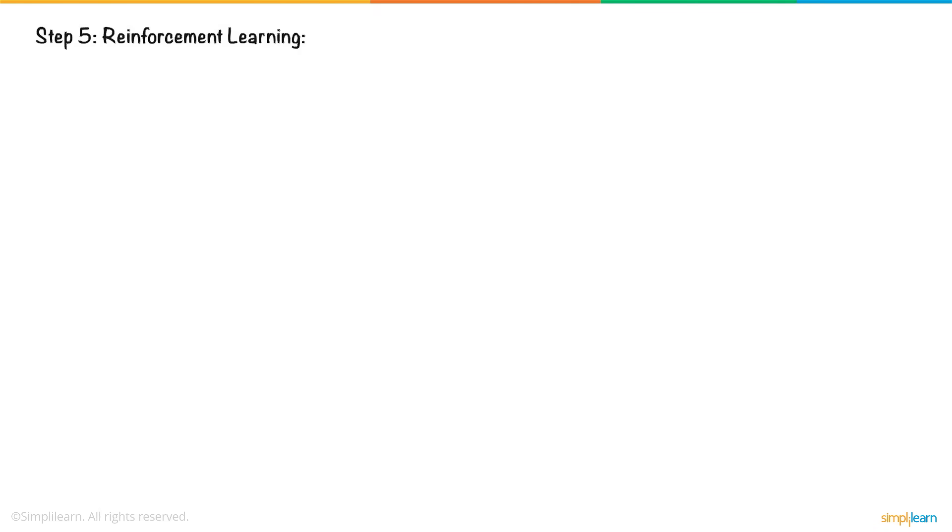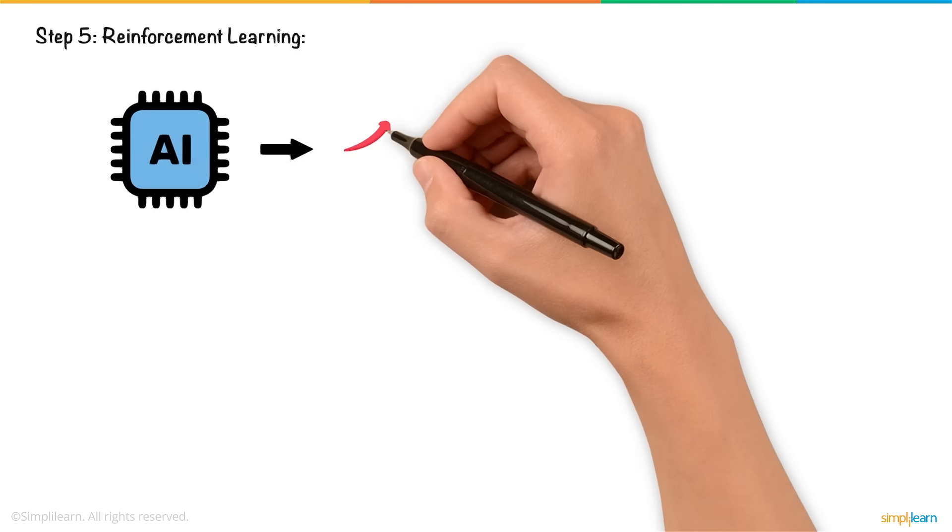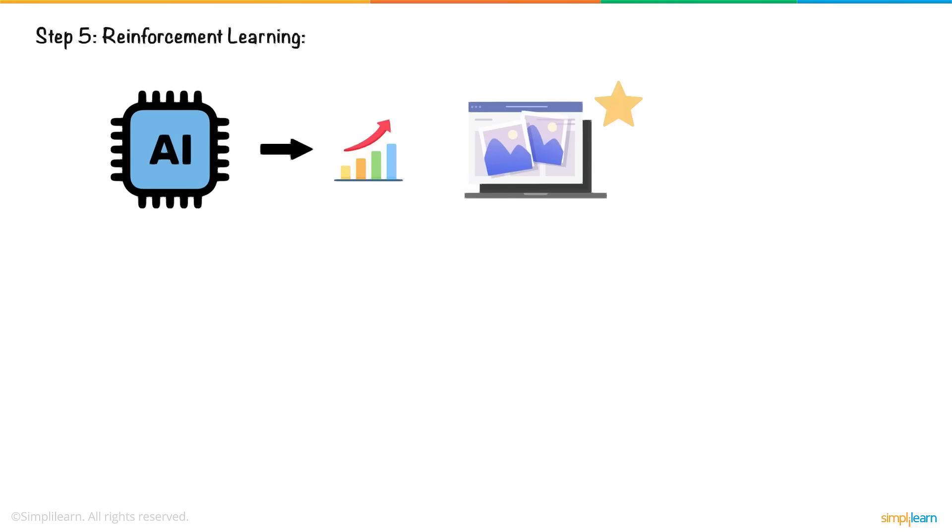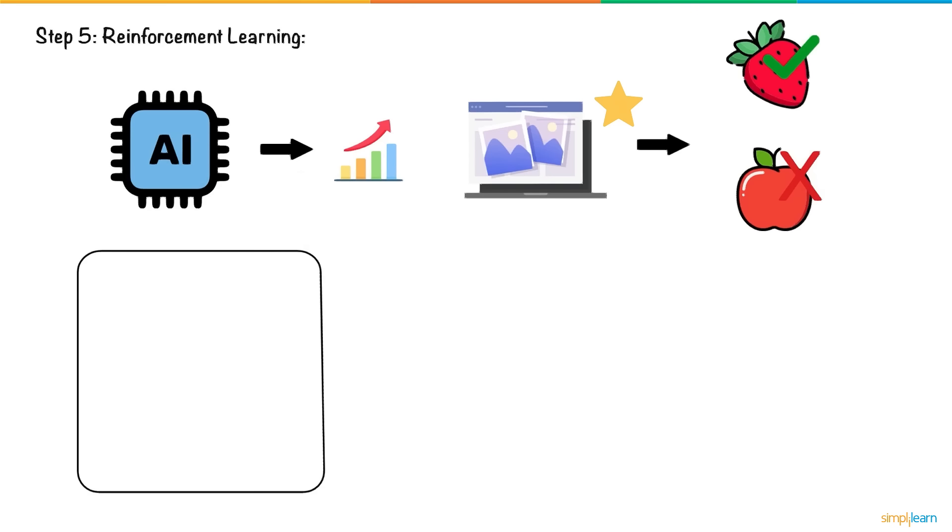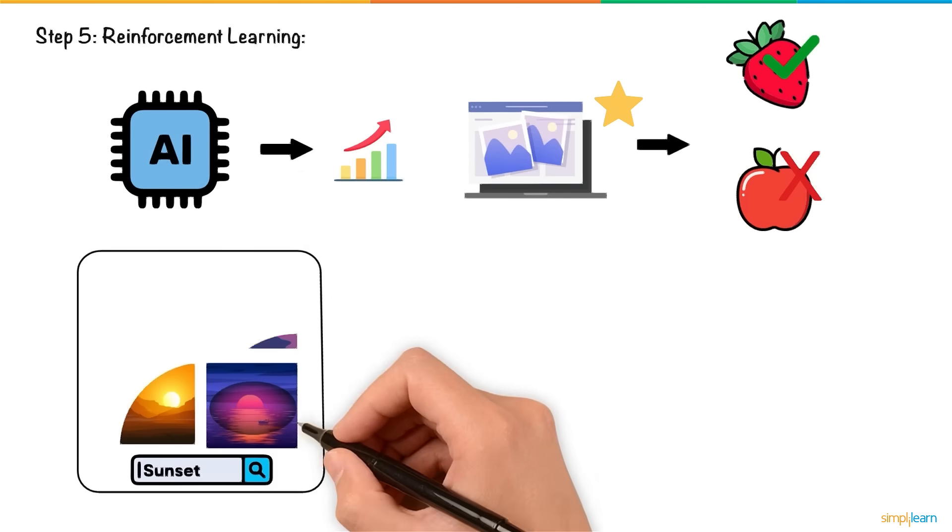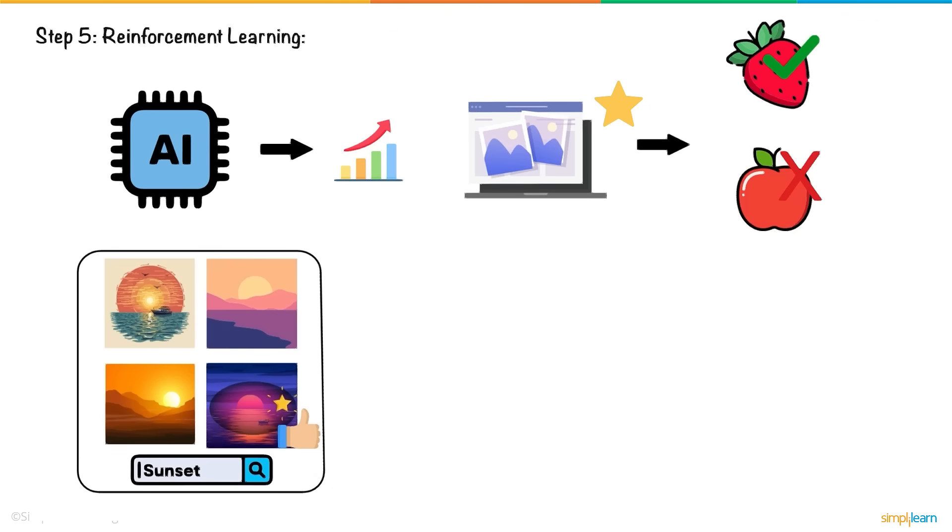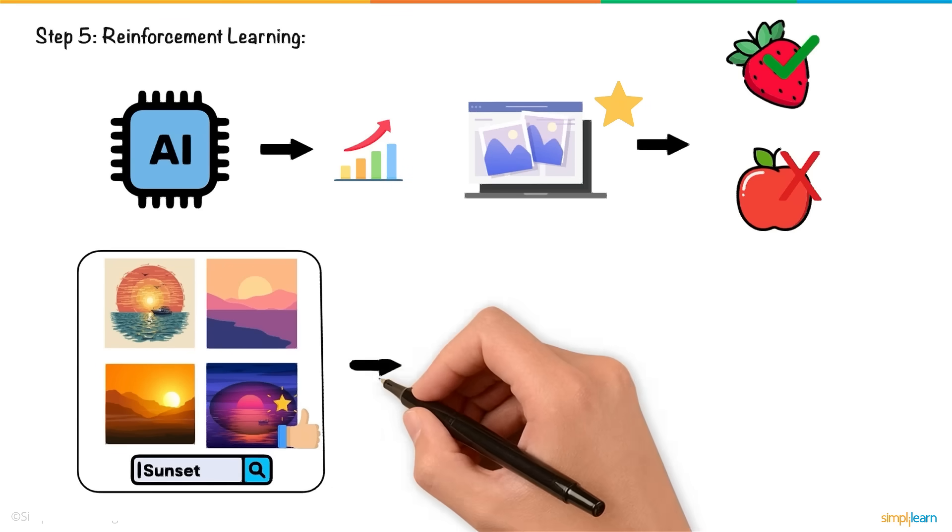Reinforcement Learning: Reinforcement Learning further enhances the AI's ability. The model is rewarded when it generates accurate images and corrected when it makes mistakes. For example, when Emma describes a sunset and the AI produces a vibrant sunset image, it receives positive reinforcement. Over time, this method refines the model's ability to generate better images.